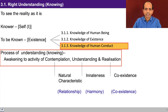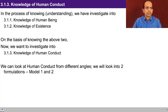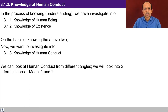Natural characteristic is also called as relationship. If you look at this complete course, we are intending to awaken the higher activities of the self so that the lower activities of the self get guided and get self-organized. In the process of knowing, that is understanding, we have to investigate into knowledge of human being and knowledge of existence. And on this basis, we want to investigate into knowledge of human conduct.